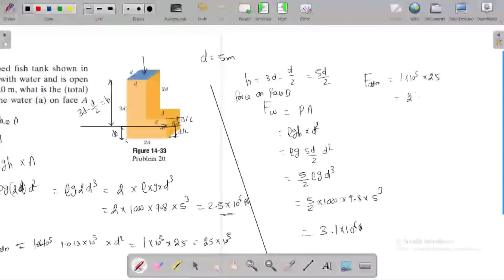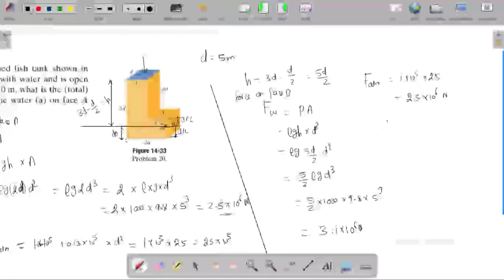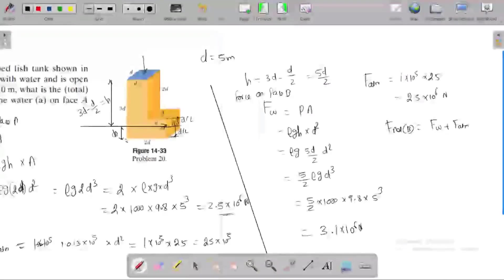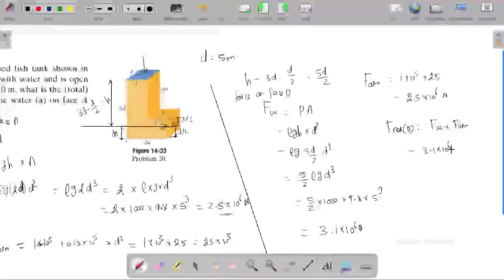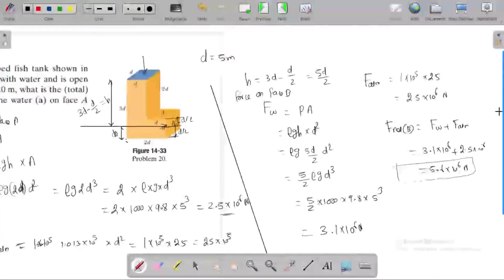Force by the atmosphere is atmospheric pressure times 5 times d square, giving 2.5 times 10^6 newton. Net force acting on phase B is force by water plus force by atmosphere: 3.1 times 10^6 plus 2.5 times 10^6, giving 5.6 times 10^6 newton.